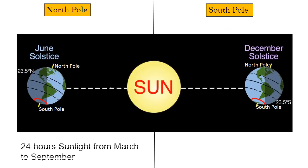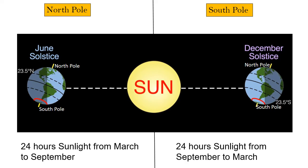The North Pole has sunlight 24 hours a day. The sun is visible at the North Pole from March through September, while it is visible at the South Pole from September to March. For six months of the year, the sun never rises over one pole and never sets over the other.